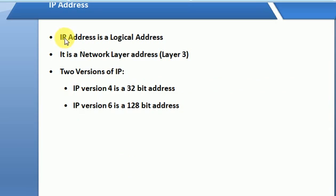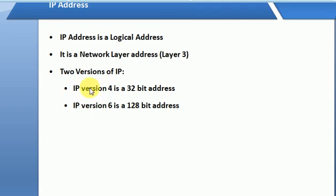IP Address is a logical address. It is a network address — a Layer 3 address. IP Address has 2 types: IP Version 4 and IP Version 6. IPv4 is a 32-bit address and IPv6 is a 128-bit address.